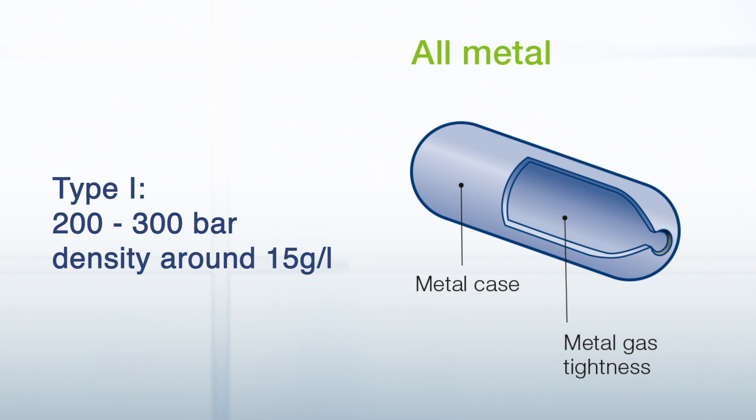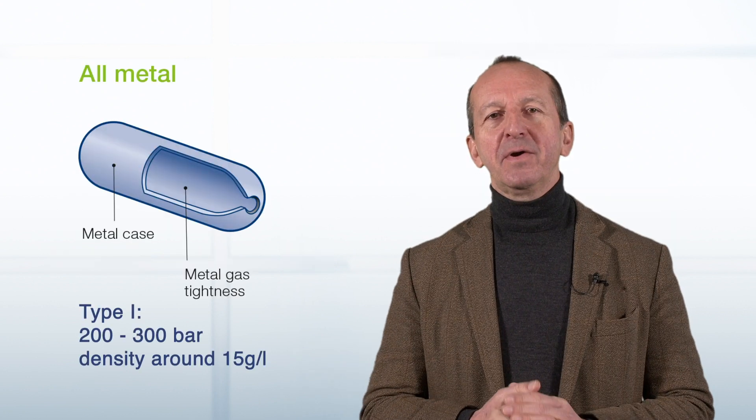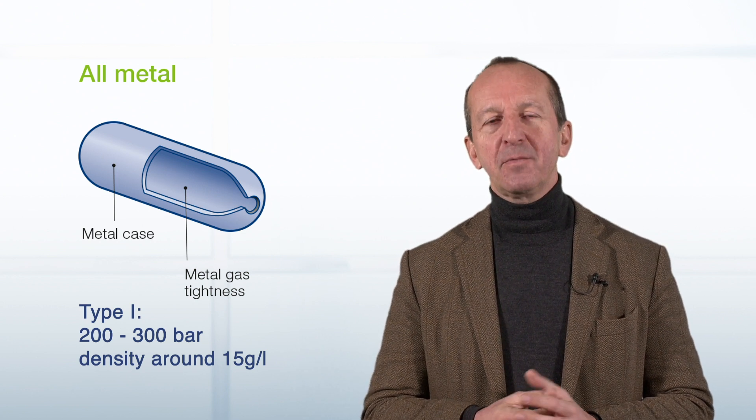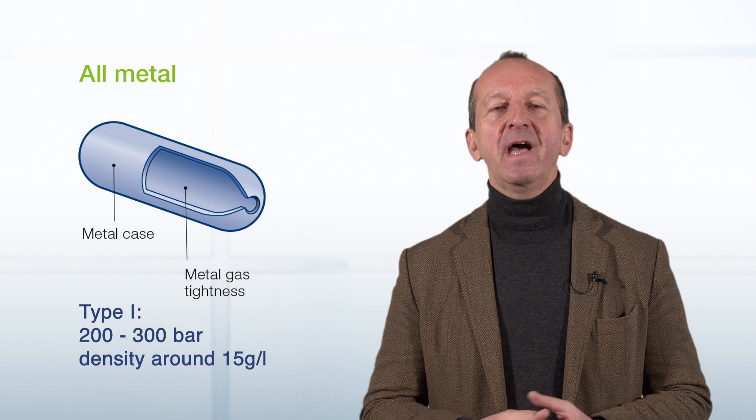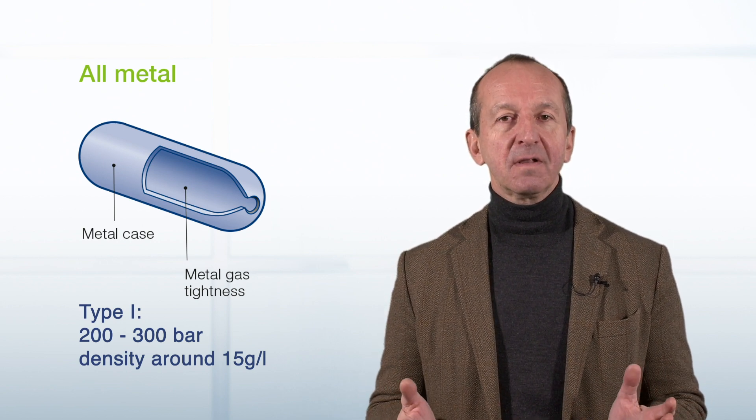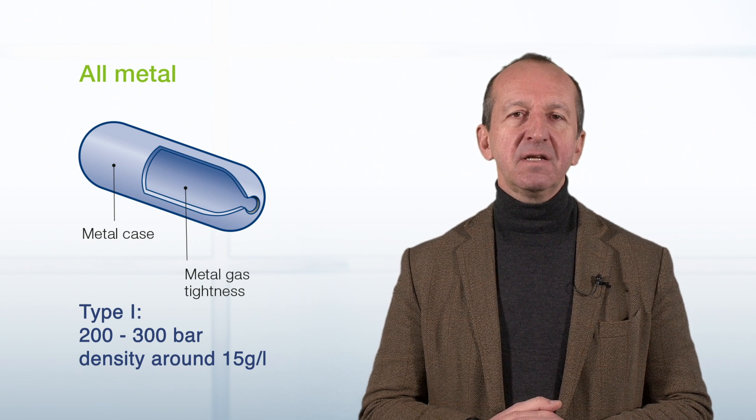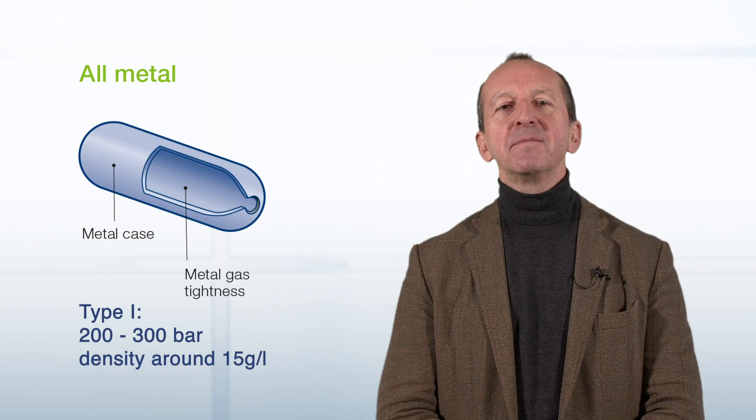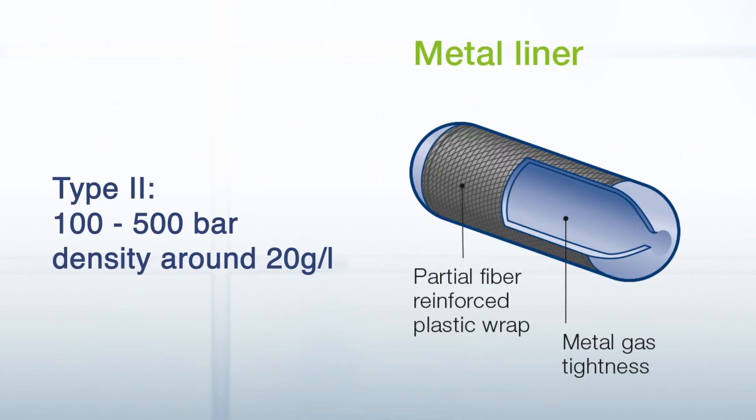This is simply a cylinder made of steel as known from your welding equipment. The operating pressure is from 200 to 300 bar. In these Type 1 tanks, for example, the hydrogen is also supplied in bundles. It's typical for your industrial application. The density of such a Type 1 storage is around 15 grams per liter.